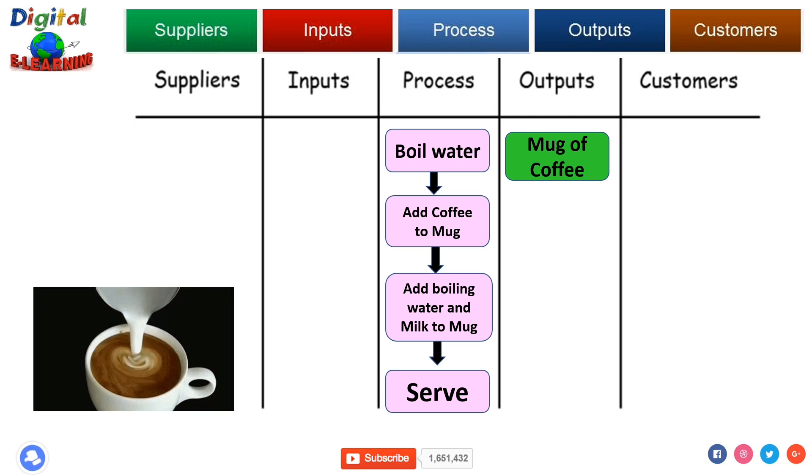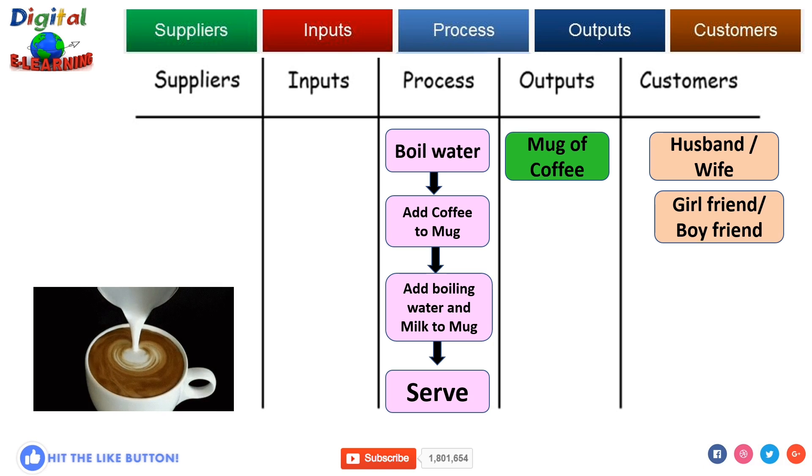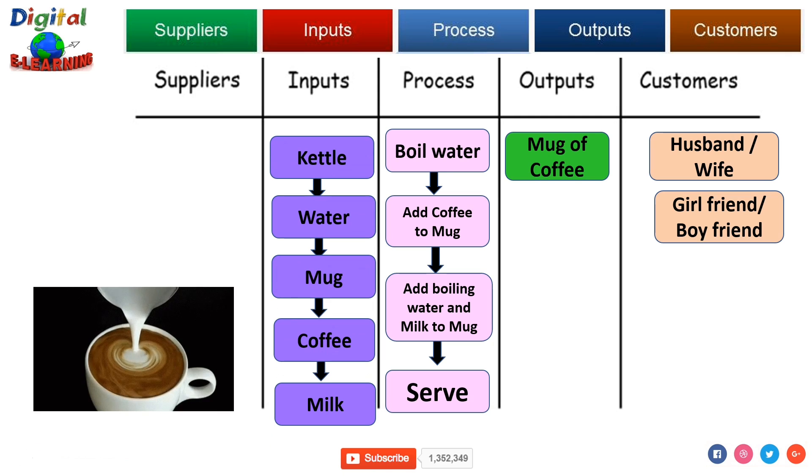Who could be my potential customers? In this case, it could be your husband, your wife, your boyfriend or girlfriend, or it would be your customers also. What are the inputs that you need for getting a cup of coffee? I need a kettle, water, mug, coffee, and milk. And from where can I get this input? You can go to any corner shop or any Walmart or any other shop where you can get this input. This is a typical example of a SIPOC diagram.